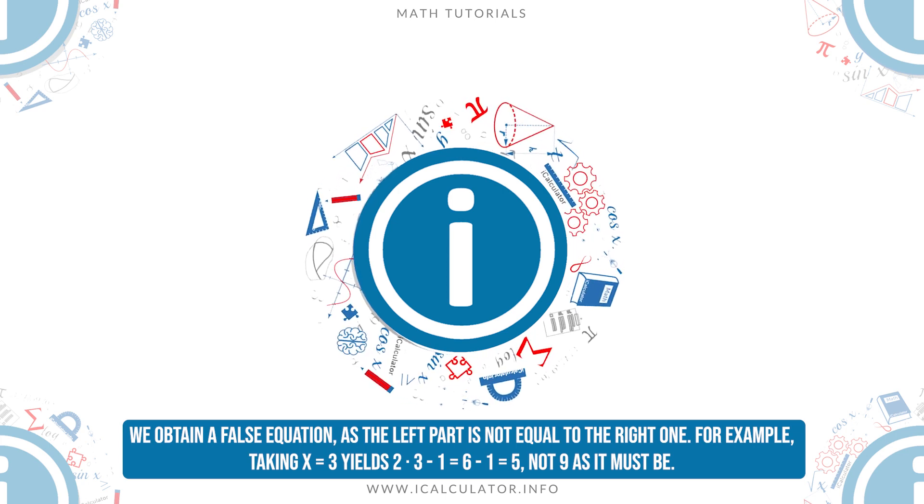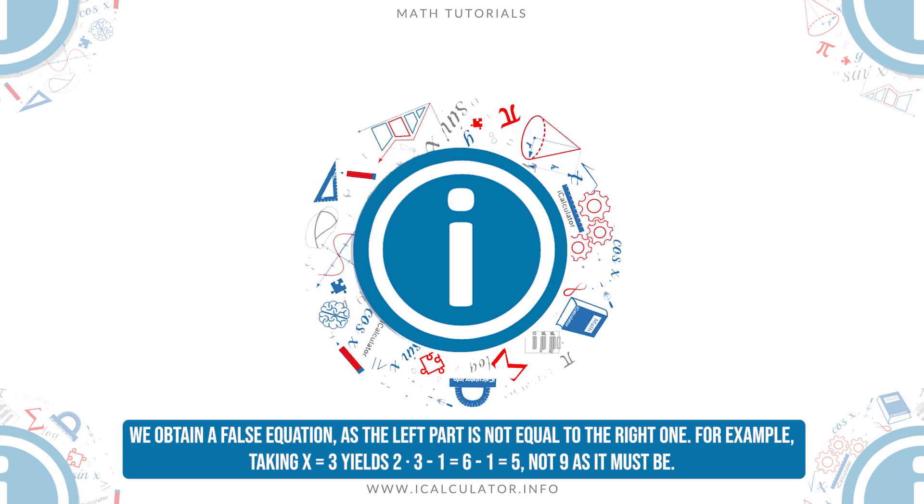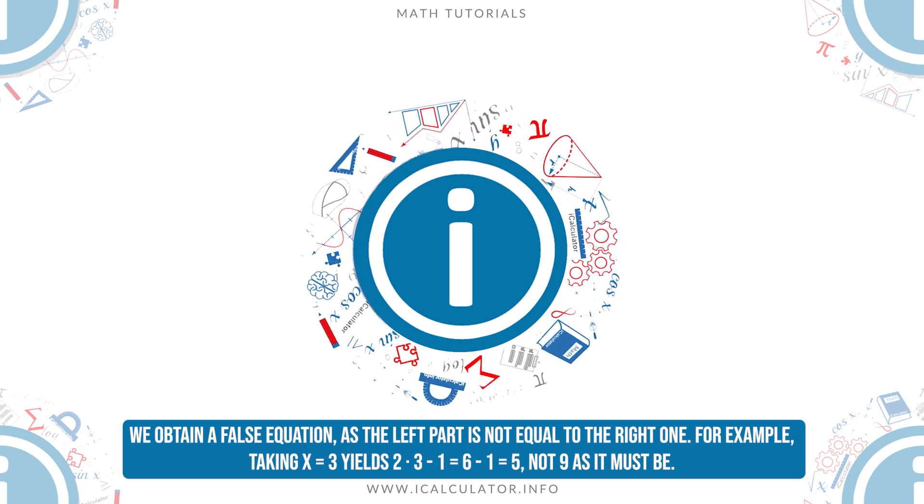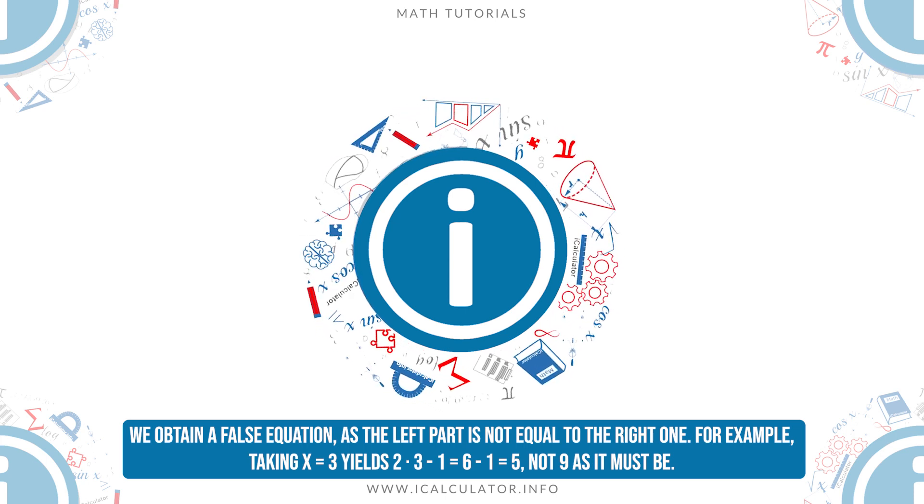For example, taking x equals 3 yields 2 times 3 minus 1 is equal to 6 minus 1 is equal to 5, not 9 as it must be.